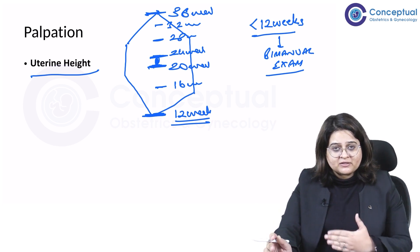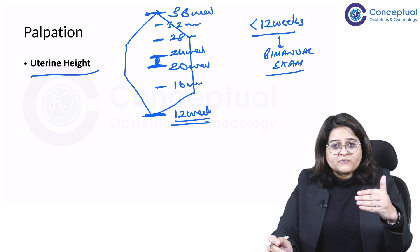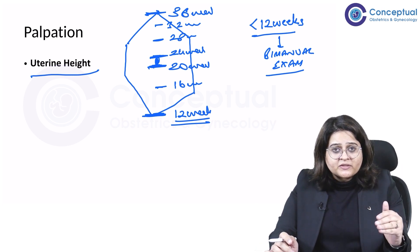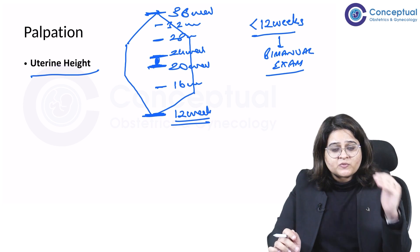Then it starts increasing in size and reaches the xiphisternum at 36 weeks. So we have 12 weeks at the pubic symphysis, 16 weeks midway between the pubic symphysis and the umbilicus.